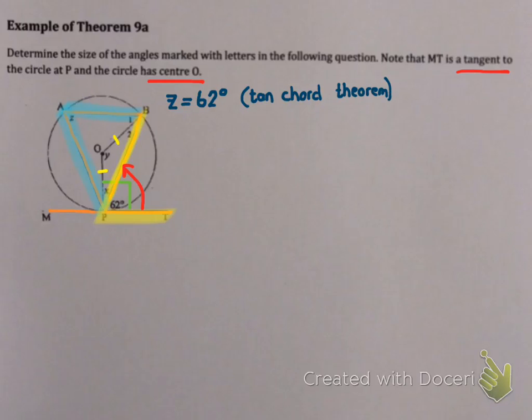Now X, I've already said that X and the 62 will make 90. So X is 90 minus 62. And my reason was tangents are perpendicular to radii. That was theorem 7. So X is equal to 28.